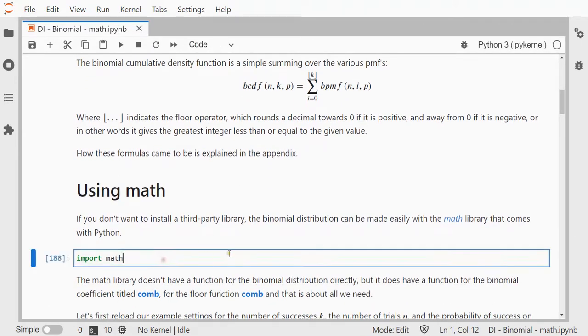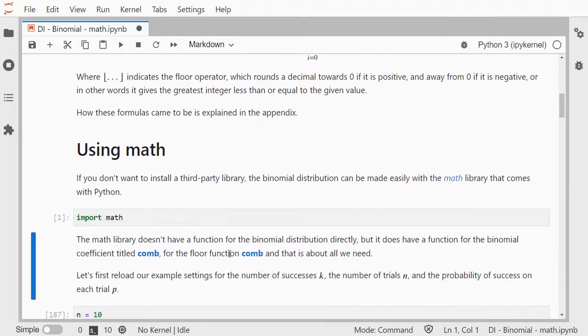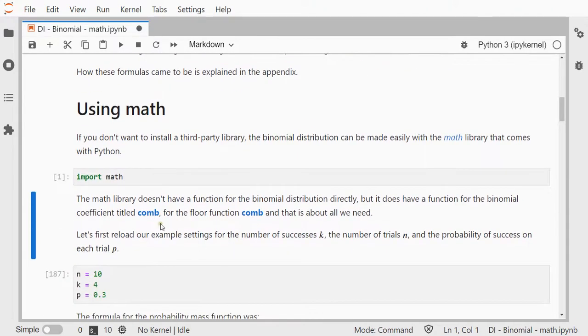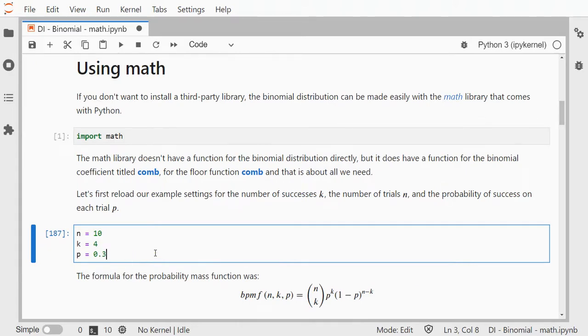I will use the math library and that's needed to have the combinations which is actually the binomial coefficient. I will be using as an example a number of trials of 10, a number of successes is 4, and the probability on each trial of 0.3.